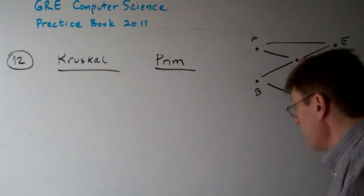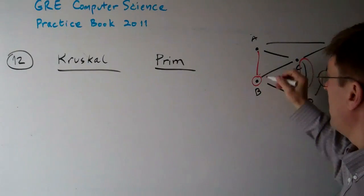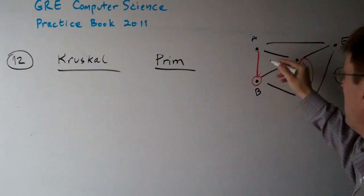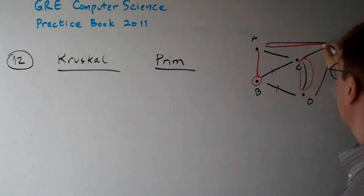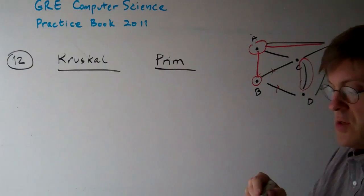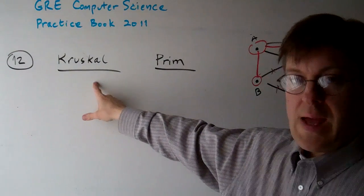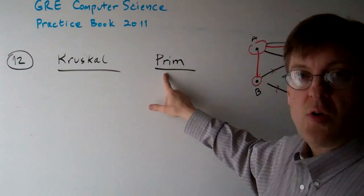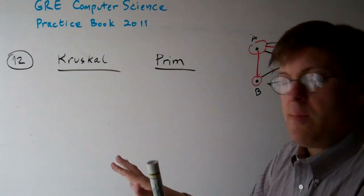Prim's algorithm starts with a vertex and then takes the lowest edge of that vertex and gets rid of the other ones, then takes the lowest from the vertices you have left over. So one of them goes after the edges, the other one starts node by node. Prim's algorithm stays connected at all times.